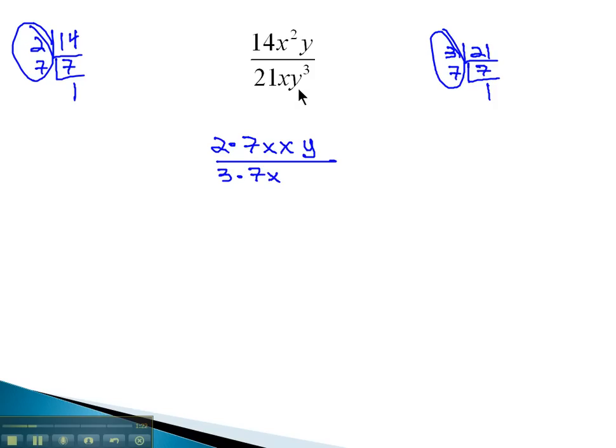And then we have an x and y cubed. Y cubed means y is multiplied 3 times.